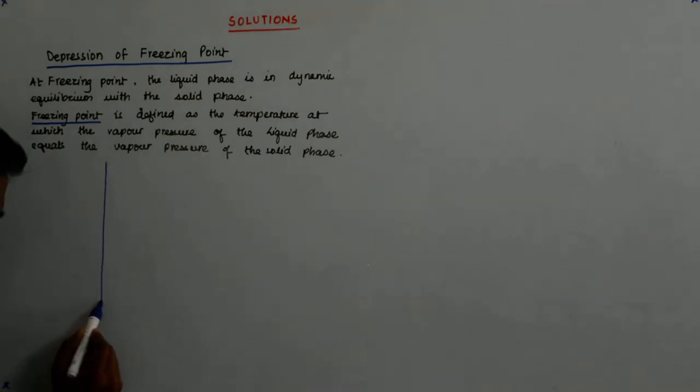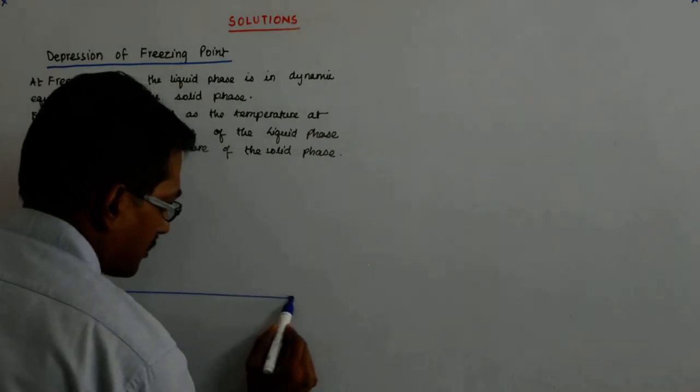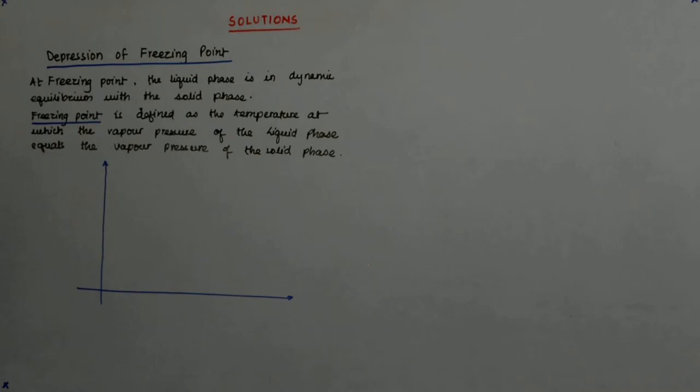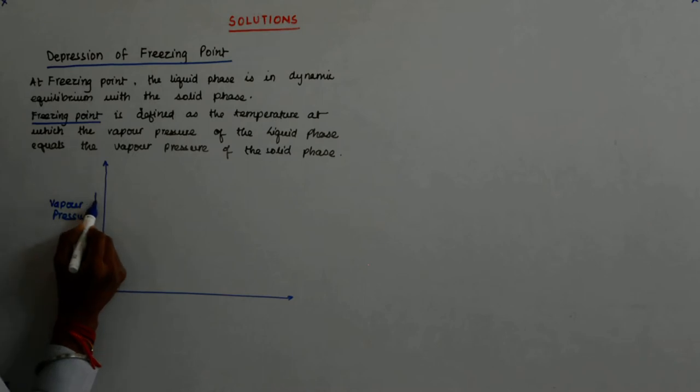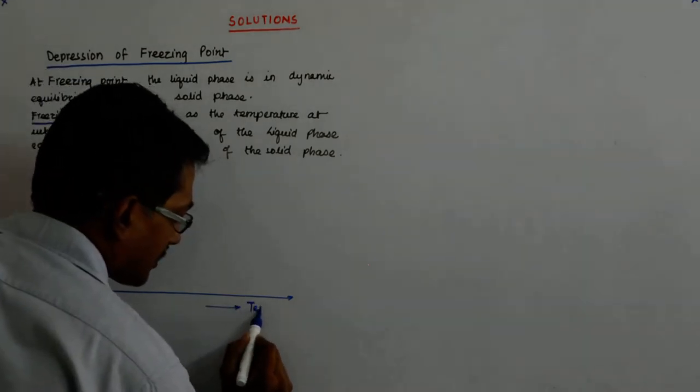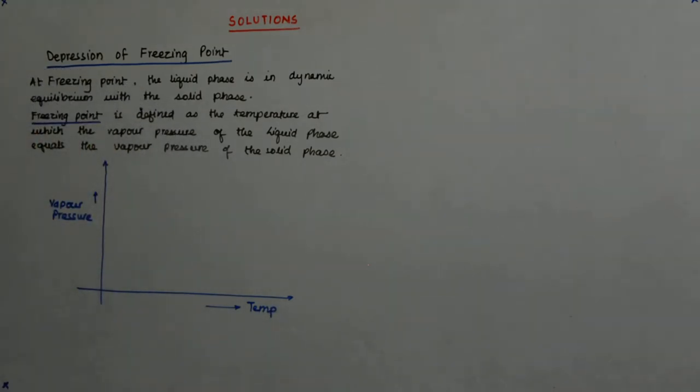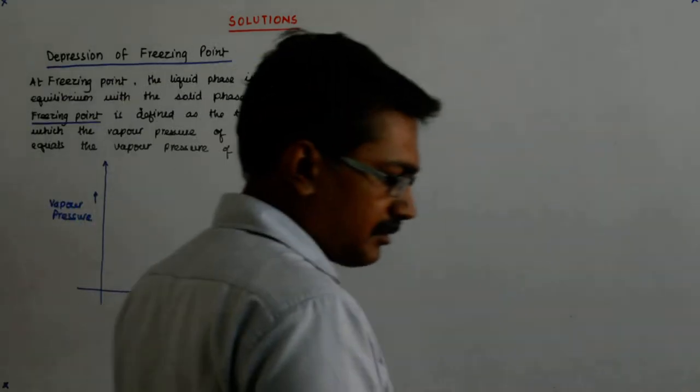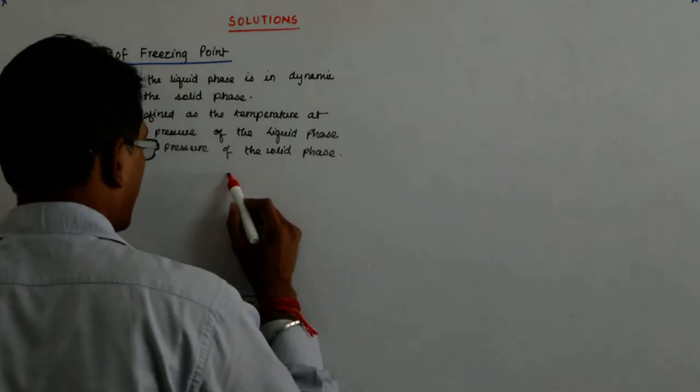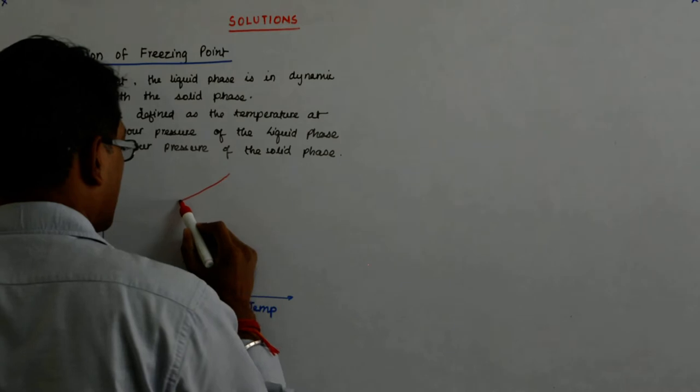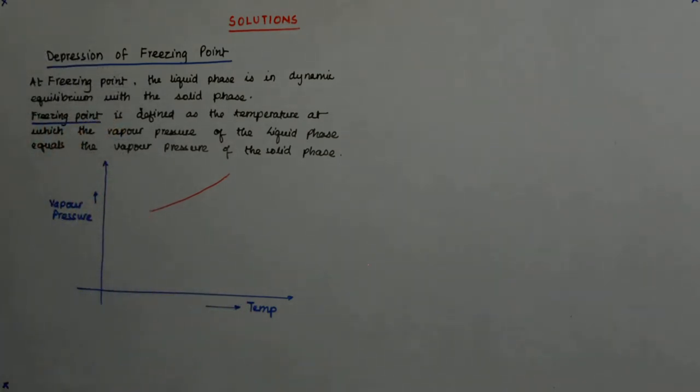So, this is the graph between the vapor pressure on the y axis. So it is vapor pressure and this is temperature. Vapor pressure and temperature. Now, my liquid solvent is something like this.